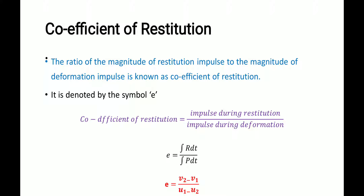Let us understand coefficient of restitution. The coefficient of restitution is equal to the impulse during restitution divided by the impulse during deformation. We studied deformation impulse and restitution impulse. After substituting, we get the value of E, the coefficient of restitution, as E = (V2 − V1) / (U1 − U2), where U represents initial velocities and V represents final velocities.